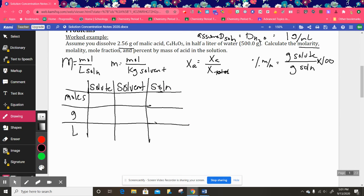Okay, and we're going to take whatever information we already have given to us, and we're going to plug it into this table. So I have 2.56 grams of malic acid, so that is the solute. I'm going to put that in right here, in grams, 2.56 grams.